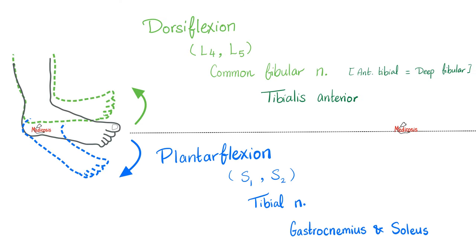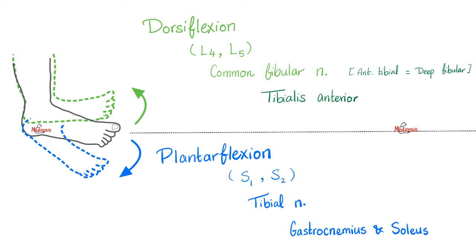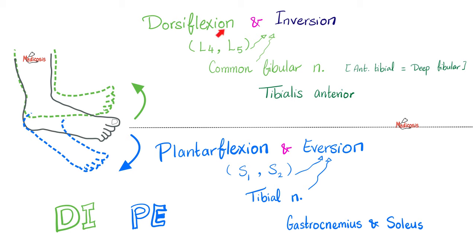Let's talk about your foot. Dorsiflexion versus plantarflexion. Who's responsible for dorsiflexion? The root is L4 and L5; the nerve is the common fibular or deep fibular nerve; the main muscle is tibialis anterior. For plantarflexion, the root value is S1 and S2; the nerve is the tibial nerve; the muscles are gastrocnemius and soleus. Dorsiflexion usually comes with inversion — same nerve and root. Plantarflexion usually comes with eversion.